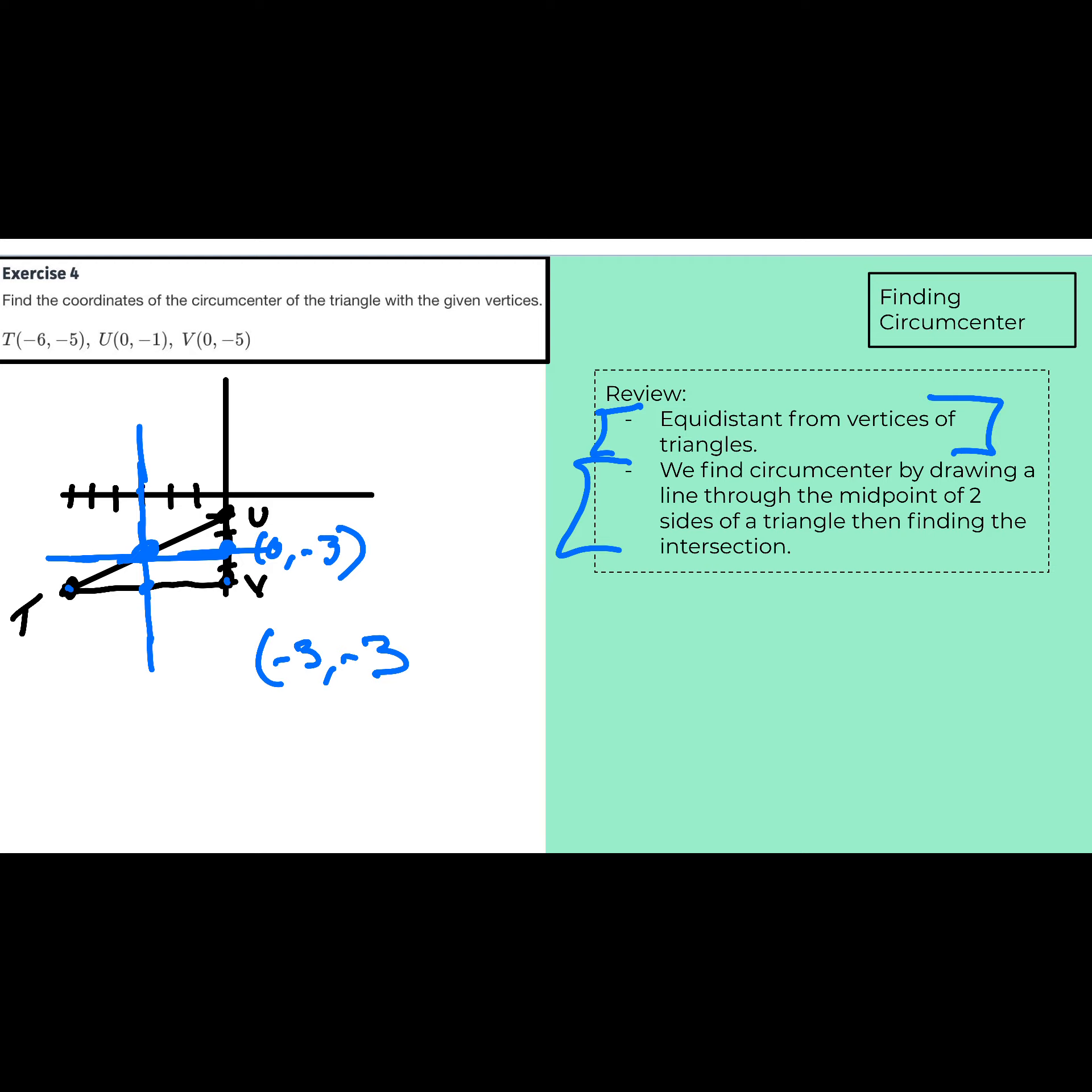So, then the point where they intersect is at negative 3, negative 3. Okay? Now, this point, negative 3, negative 3, is the same distance from, like it says, the definition of our circumcenter. It's the same distance from U, T, and V. But we don't even really use those vertices to find our circumcenter. We use the midpoint of the line segment. Do you guys see what I'm getting at with that?